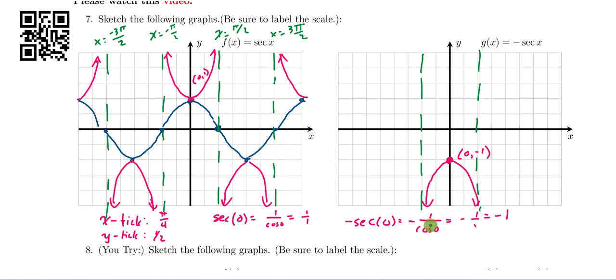and there would be the asymptotes. So notice the asymptotes aren't going to change. This is still going to be undefined at all of my odd multiples of pi over 2. So the asymptotes haven't changed. So let's go ahead and finish sketching those out.